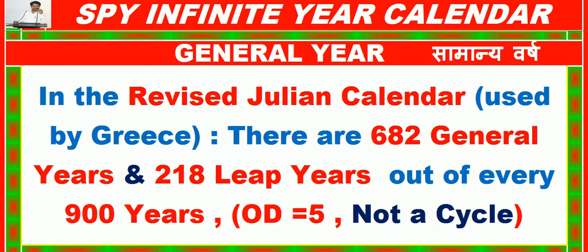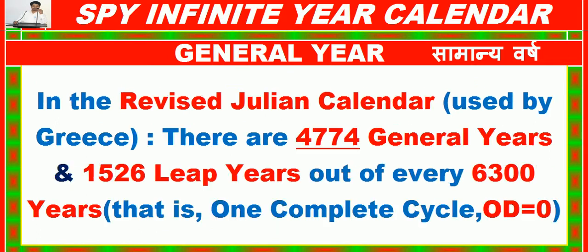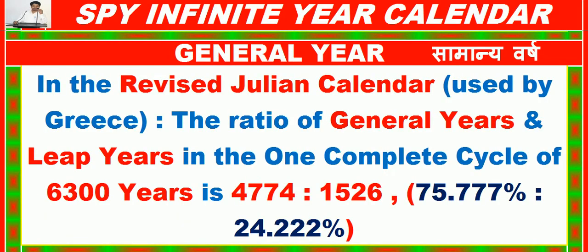In the Revised Julian Calendar used by Greece, there are 682 general years and 218 leap years out of every 900 years (OD = 5, not a cycle). There are 4774 general years and 1526 leap years out of every 6300 years (1 complete cycle, OD = 0). The ratio in the 6300-year cycle is 4774:1526, or 75.777% to 24.22%.